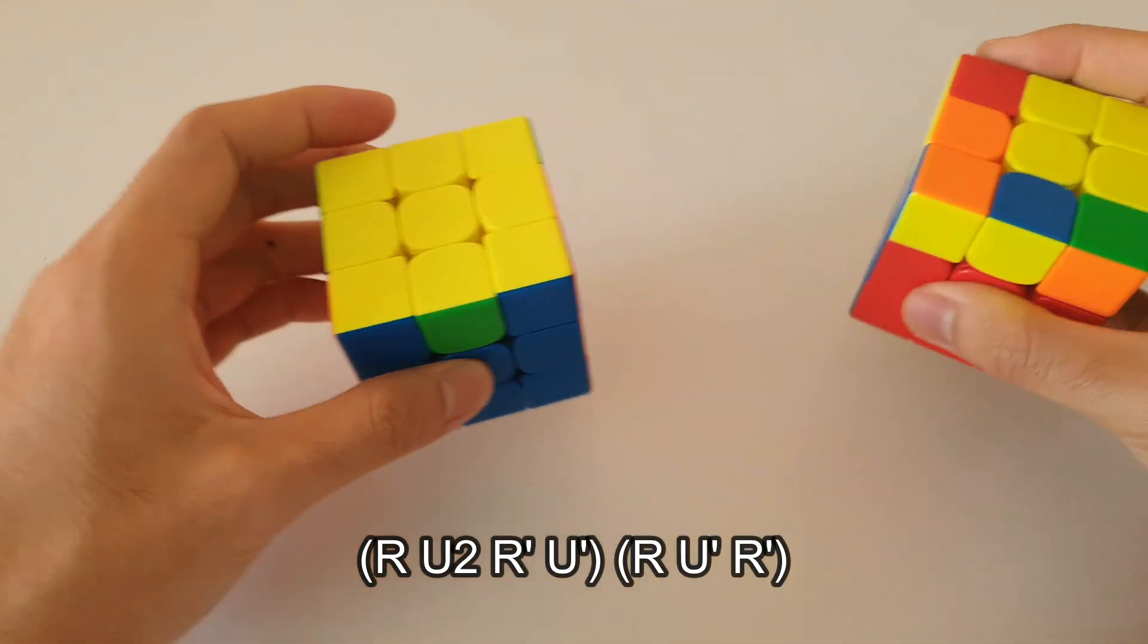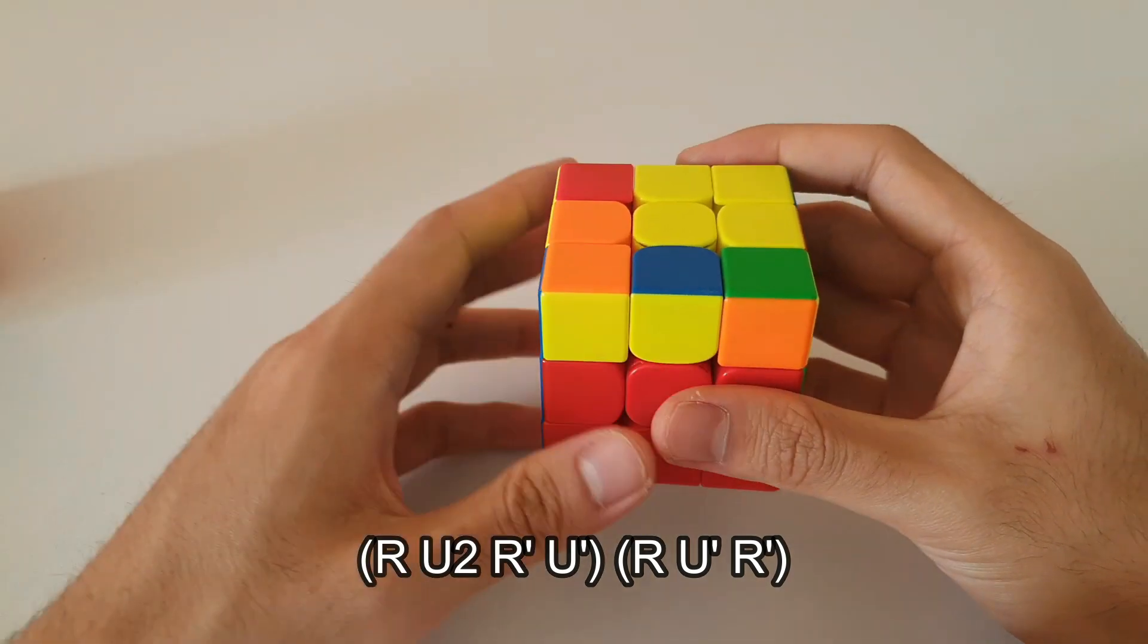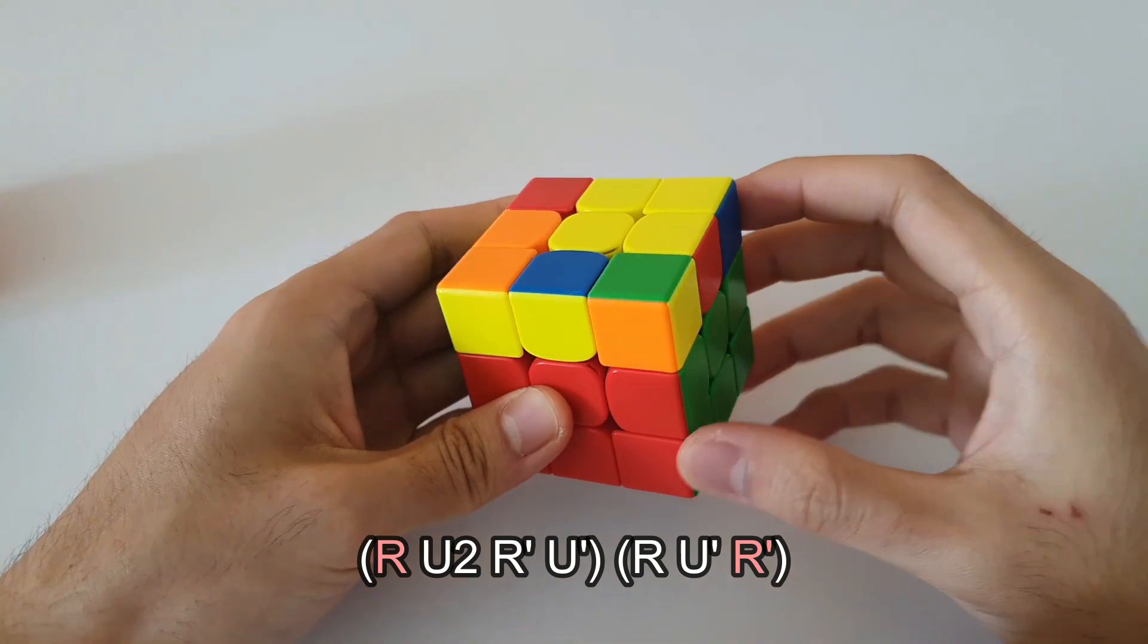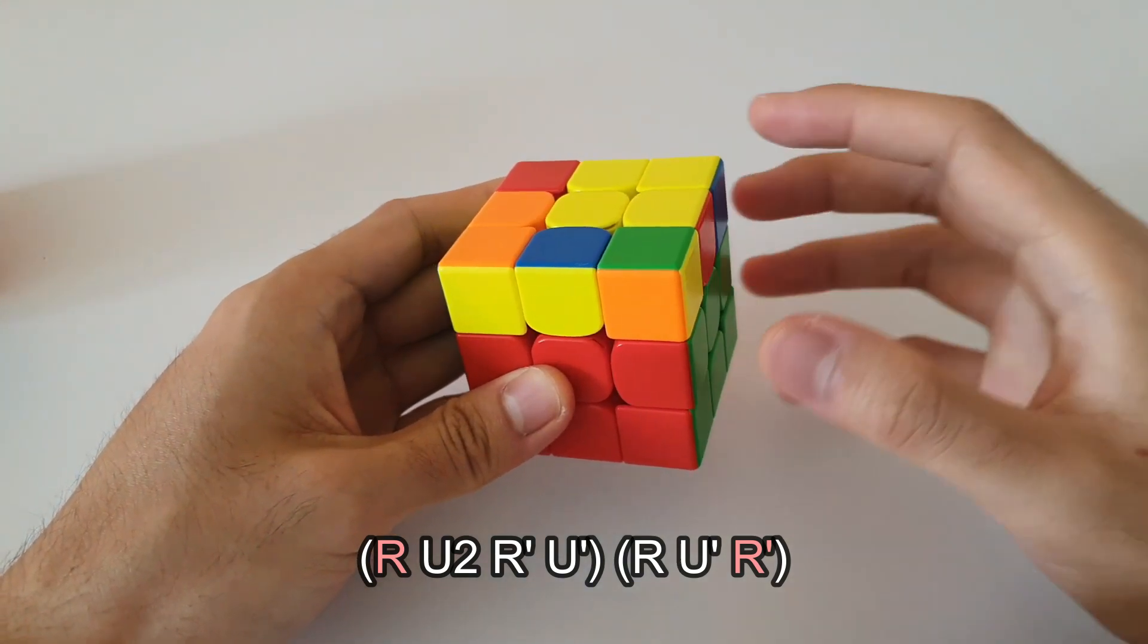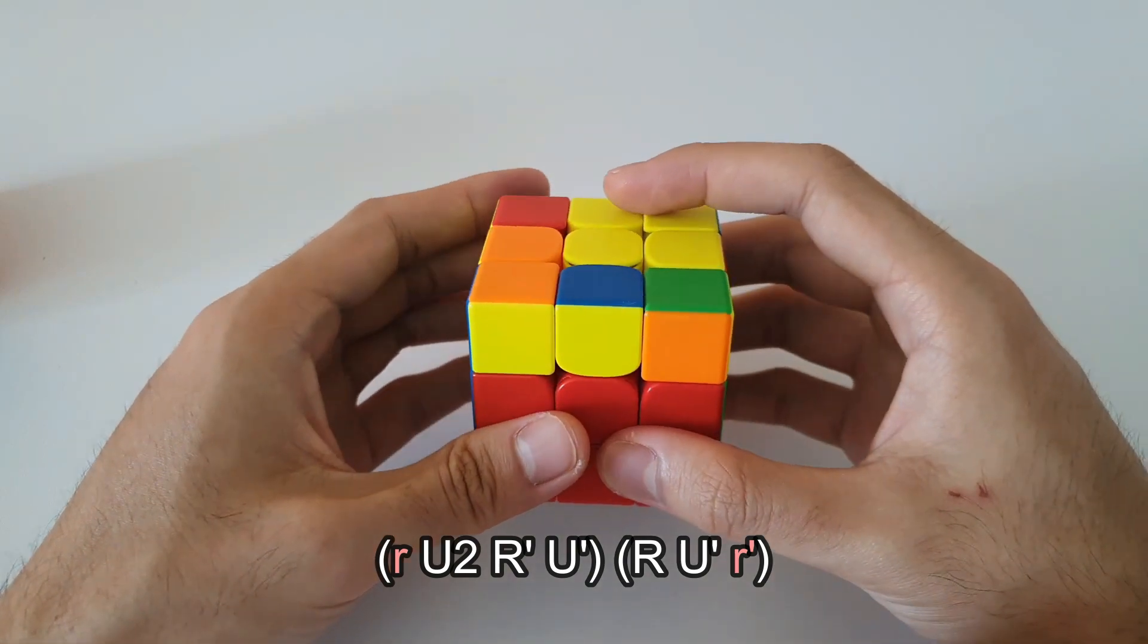So I wanted to show that because the algorithm to solve this case is extremely similar to the algorithm that I just shown. The only difference is that the first move and the final move is a wide R move rather than a single layer R move. So it goes like this.